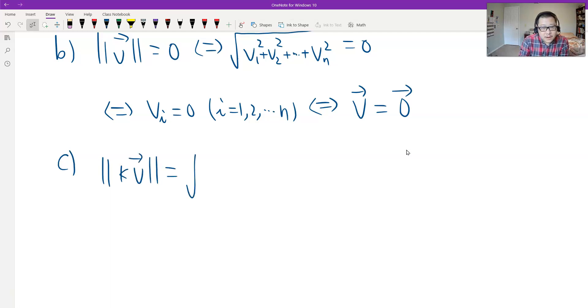By the calculation, the first component is K times V1 squared, and the second should be K times V2 squared, and then goes on to K times Vn squared. This is the definition.